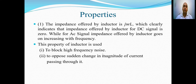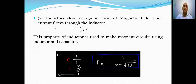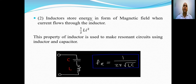An inductor is also used to oppose sudden changes in the magnitude of current passing through it. The second property of an inductor is that it stores energy in the form of a magnetic field. When current I flows through an inductor, the magnetic energy stored is given by ½LI².